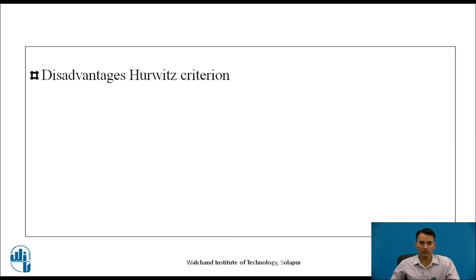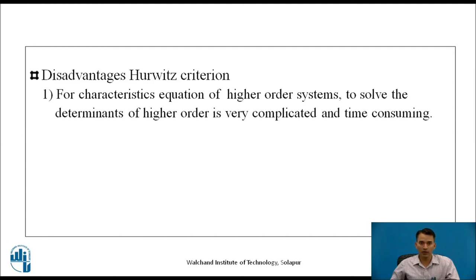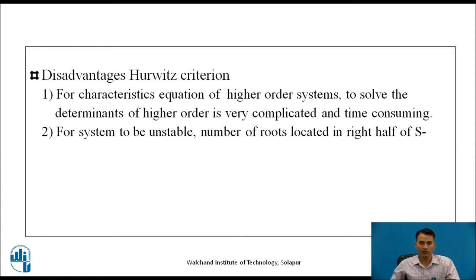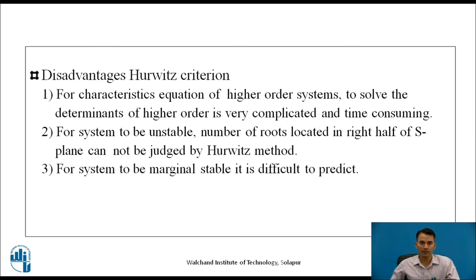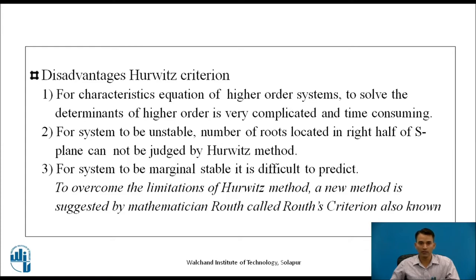There are disadvantages of Hurwitz's criteria. For a characteristic equation of a higher order system, solving determinants of higher order is very complicated and time-consuming. Also, the number of roots located in the right half of the S-plane cannot be judged by this method, and it is difficult to predict marginal stability. To overcome these limitations, mathematician Routh suggested a new method called Routh's Criteria, also known as Routh-Hurwitz Criteria.